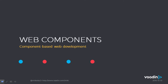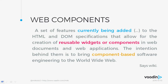Web Components is component-based web development. Wikipedia defines Web Components as a set of features that allow for creation of reusable widgets or components in web documents and web applications. Key highlights: first, it's currently being added — within a few months things will look slightly different because it's still in the process of being implemented. Second is the reusable widgets or components — the whole purpose is to take parts of somebody's web page and apply it to our own.